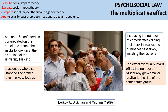Latane also suggests a multiplier effect, and conducted a study with Milgram in 1969 that supports this. A confederate stood outside a university building looking up at the sky, while Milgram filmed from the sixth floor. They used between one and fifteen confederates to see whether the number of people looking up would increase the number of passers-by who stopped to look. They found the effect eventually levels off — when the group reached 13, changing to 14 made no real difference to the number of passers-by who stopped.